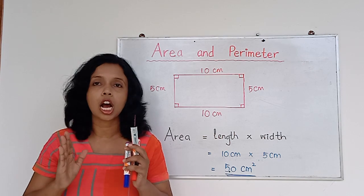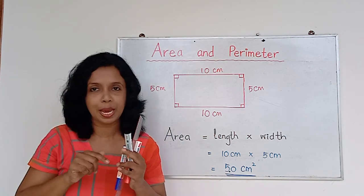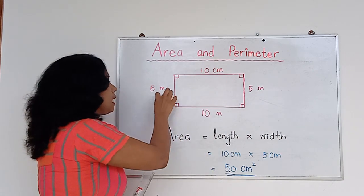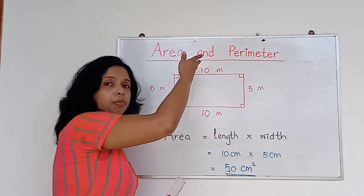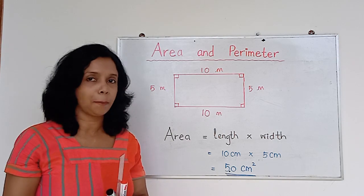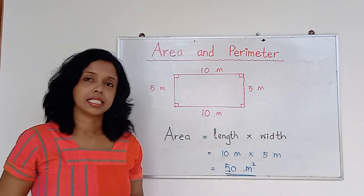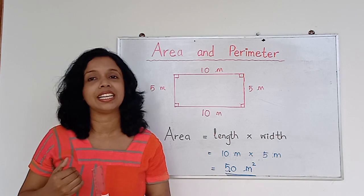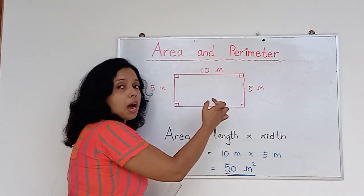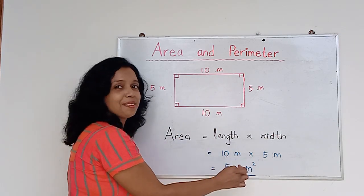Now can you understand how to find the area of a rectangular shape? Let's say my land is rectangular — the length is 10 meters and width is 5 meters. Then I want to cover the whole land with grasses. If so, I can ask the grass carpet seller for 50 square meters. That's how I go to the grass carpet seller to buy the grass carpet. Now I know the amount of space covered by the boundaries of my rectangular land — it is 50 square meters.